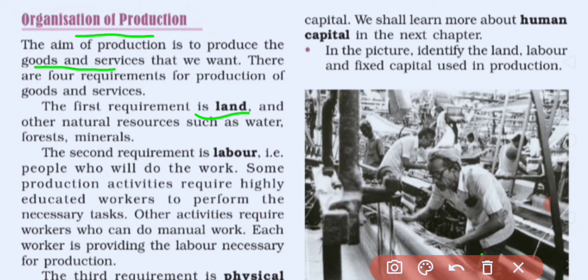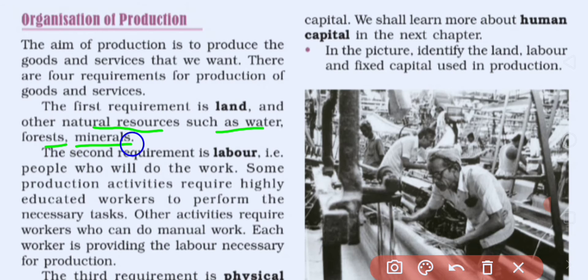Land is the first factor and the first requirement for production. Land includes all natural resources such as water, forests, and minerals — everything that we have received from nature is included in land, and we can use it in the production process.